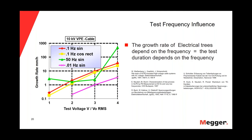Which means that if we decrease the frequency, we should extend the test time — otherwise we will not allow the electrical trees to convert to a fault. A practical approach: a VLF test at 0.1 Hz for 30 minutes produces 180 cycles. If we decrease the frequency to 0.01 Hz in 30 minutes, we will have only 18 cycles — 10 times less. That is the reason why if we decrease the frequency, we should increase the test time of the VLF test.